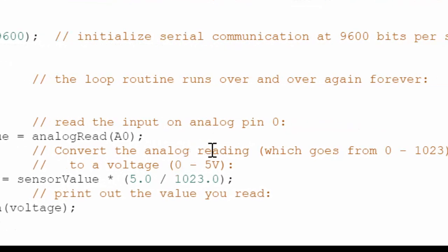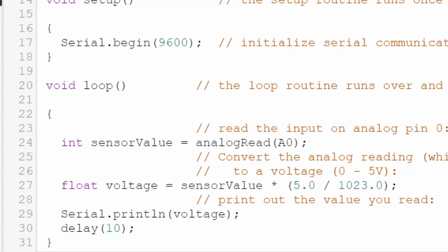Then we're going to calculate the voltage based on the fact that the analog reading can be anywhere from 0 to 1023. That number comes from the fact that it's a 10-bit analog to digital converter, and two raised to the 10th power is 1024, which is 0 to 1023. So to calculate the actual voltage, we're going to convert it to a float value instead of an integer.